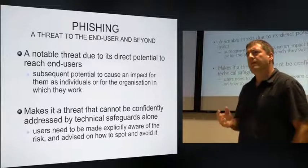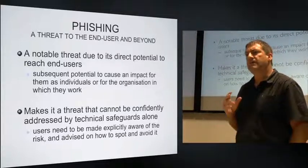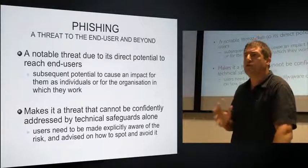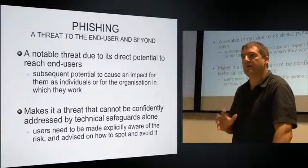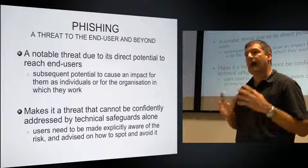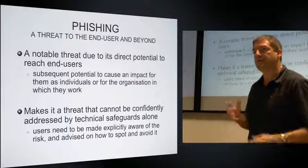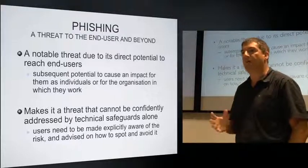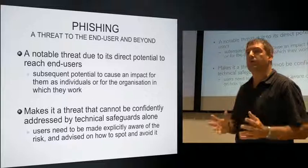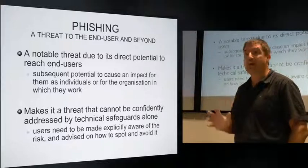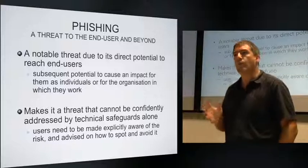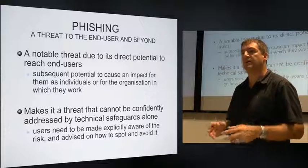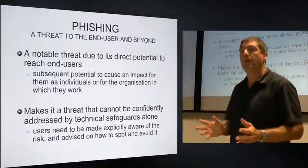Phishing is a threat that falls into the category of something that can have a direct potential to affect and reach end users. That's not true for all types of internet threat, but phishing, along with things like malware, has the potential to reach the user directly. There's a relevance in the user being not only protected, but also aware of the threat — because if they're not protected and not aware, it has the potential to affect them as a private individual, and also potentially their employer or organisation, if they're tricked into parting with sensitive information.